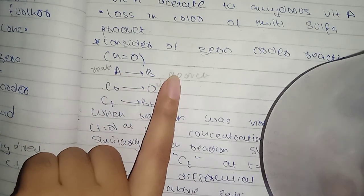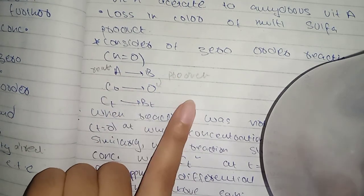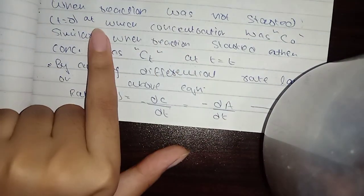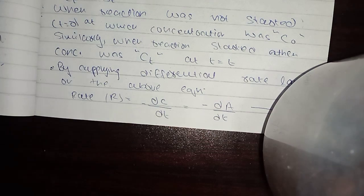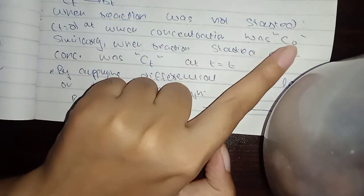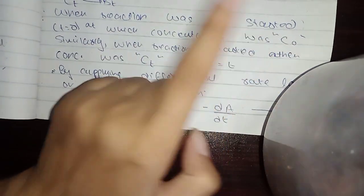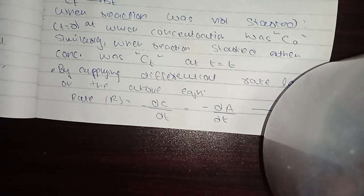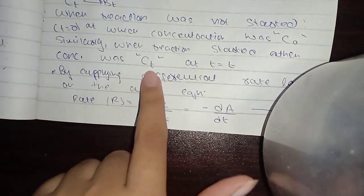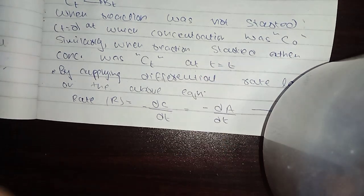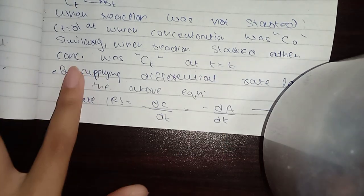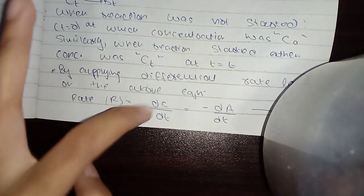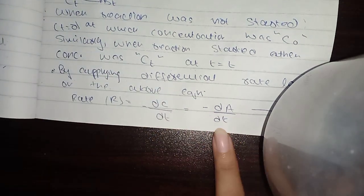A is reactant and B is product. The concentration power is zero because it is not dependent on concentration. When the reaction has not started, T is zero meaning time is zero, and the concentration is C0, the initial concentration. When the reaction starts, concentration is CT at time T. We apply the differential rate equation: dC/dT equals -dA/dT, and we find the rate from here.